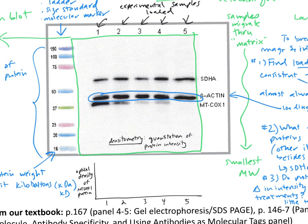Here's the kind of graph we would draw. On the y-axis is the optical density — basically the darkness, which might be measured in pixels — of MT-COX1 protein. Sometimes you'll see this expressed over the loading control like actin as a ratio, which lets us account for any slight fluctuations in loading. We'll see a little bar graph for our five different experimental treatments, and we're going to draw this ourselves to get some practice.